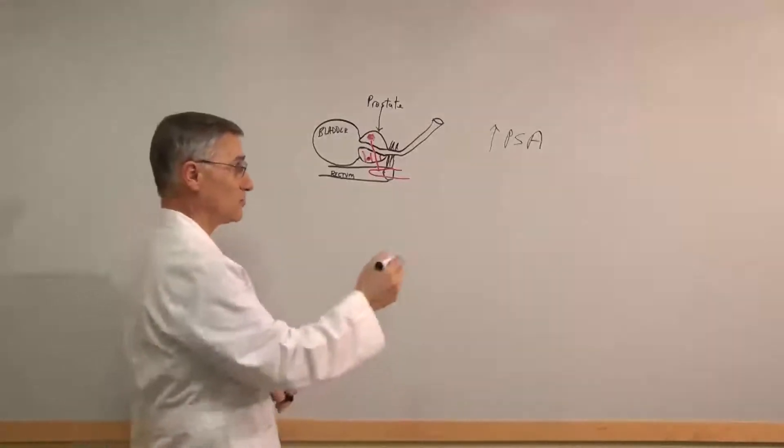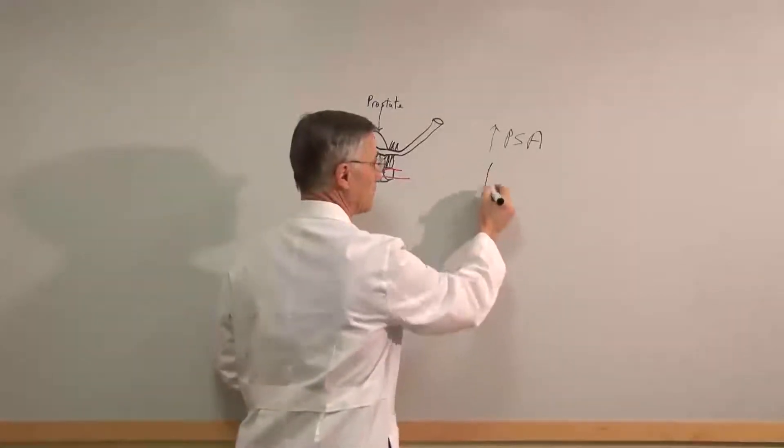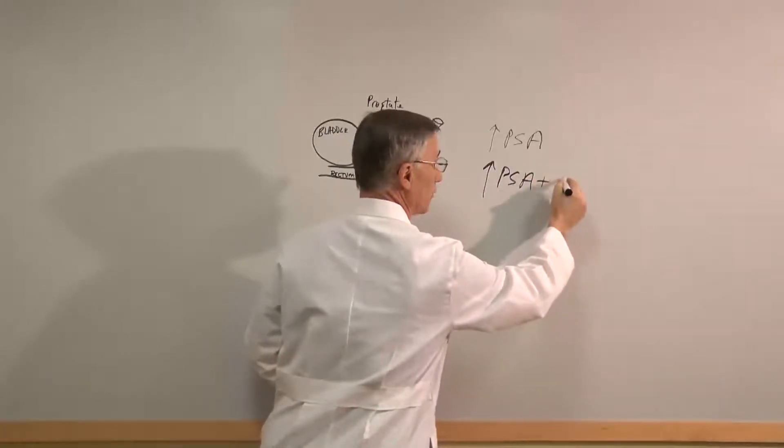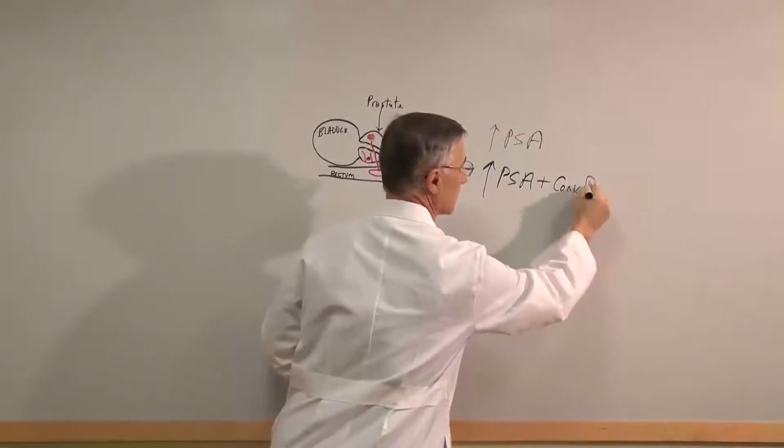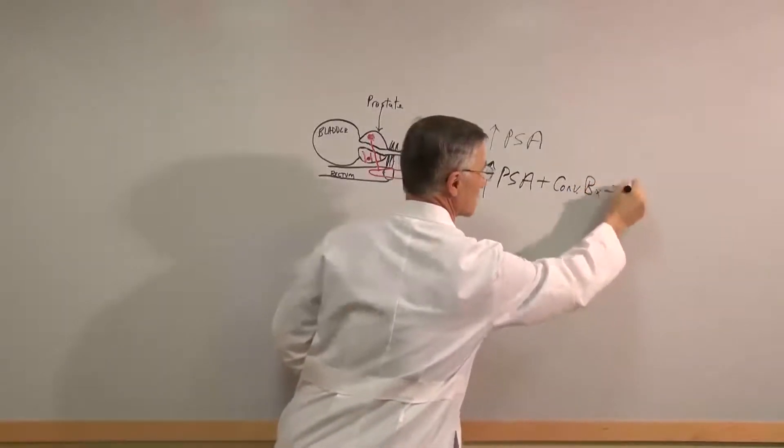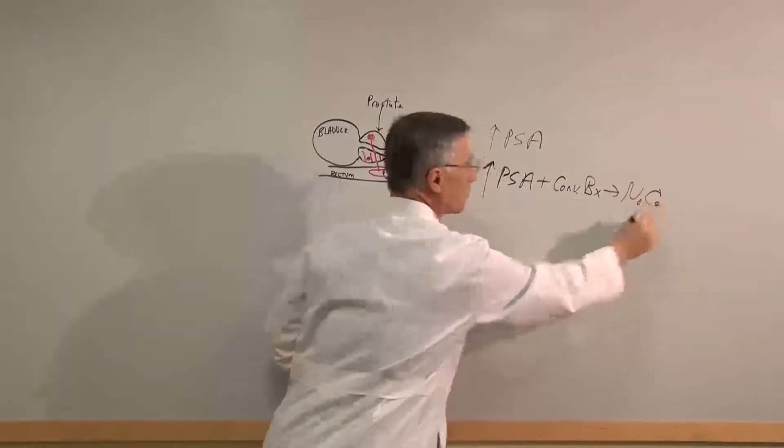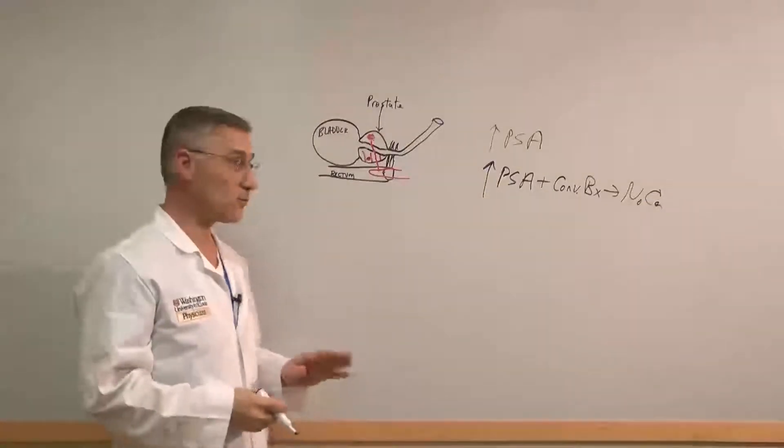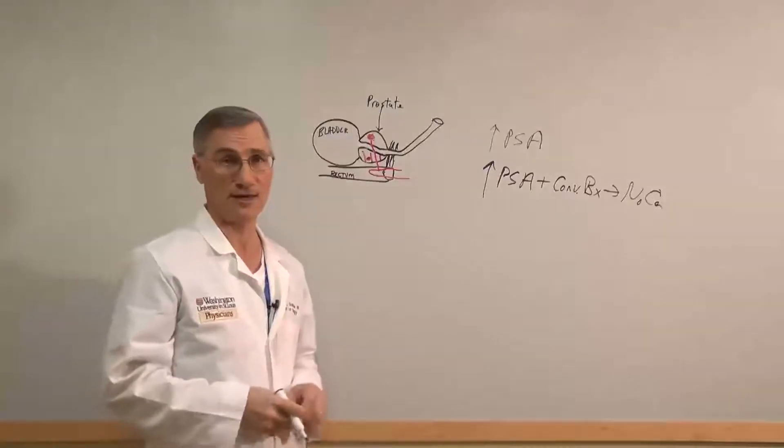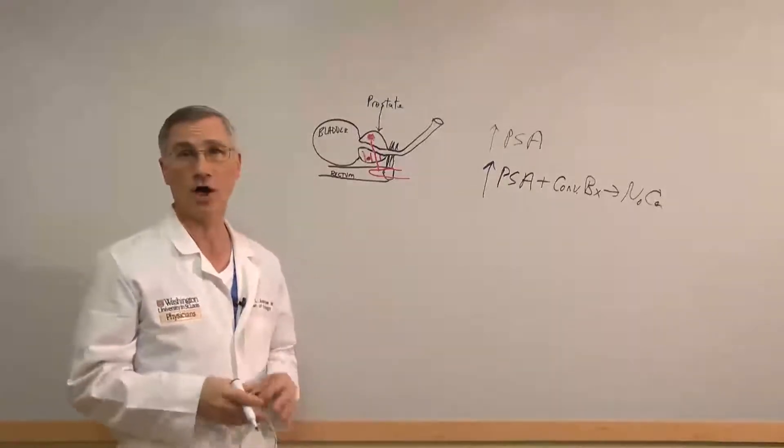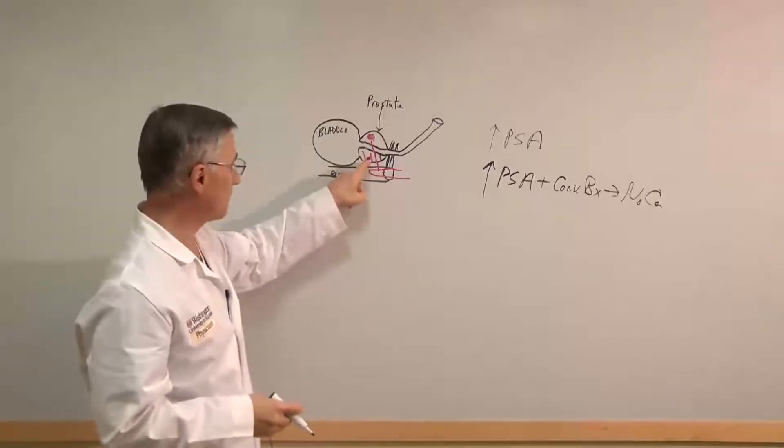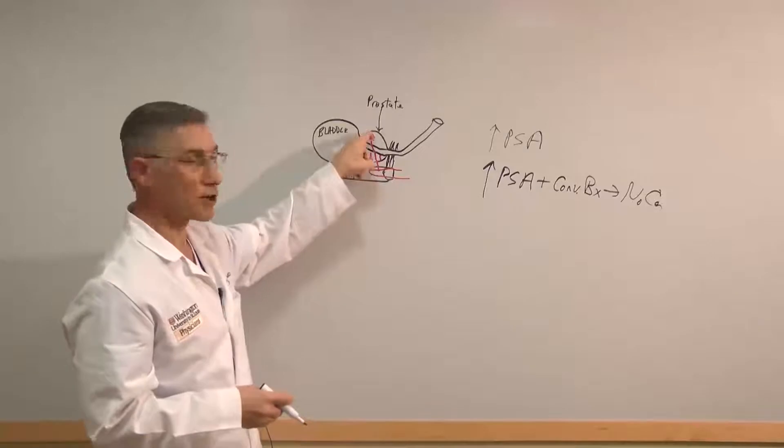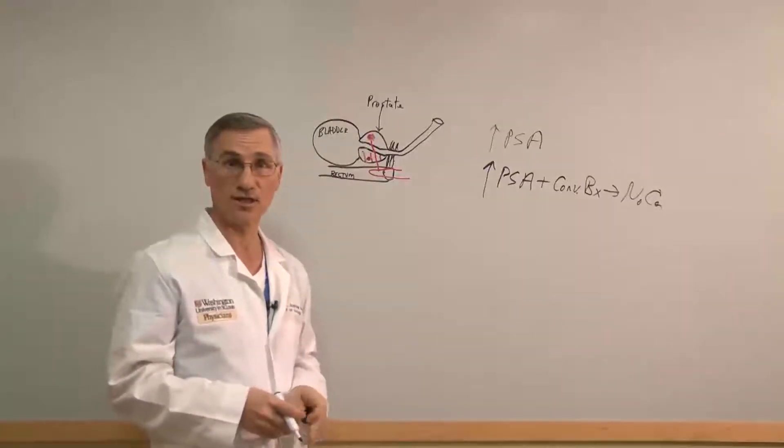The second group of men who should have this type of biopsy are men who have had an elevated PSA, but they've already had a conventional biopsy that did not show cancer. We know that about half of those patients, even though they went through the conventional biopsy and were told they didn't have cancer, actually harbor a cancer because the needles just happened to miss one that was located in the biopsy area or it was somewhere deeper in the prostate that was just not hit.